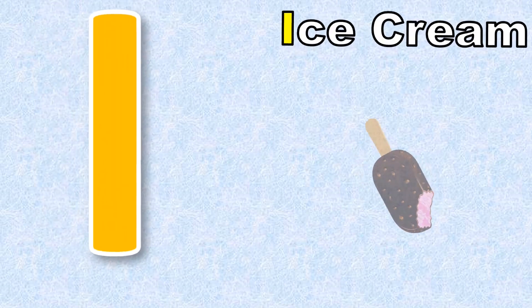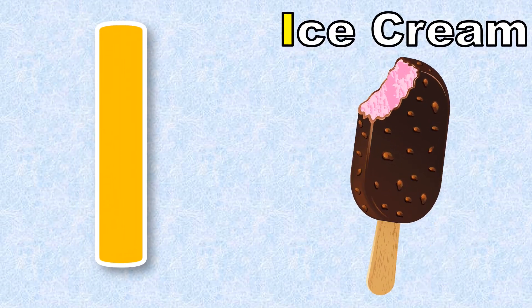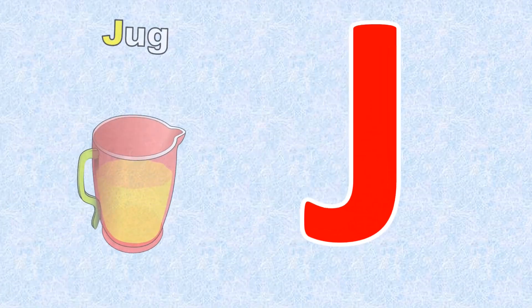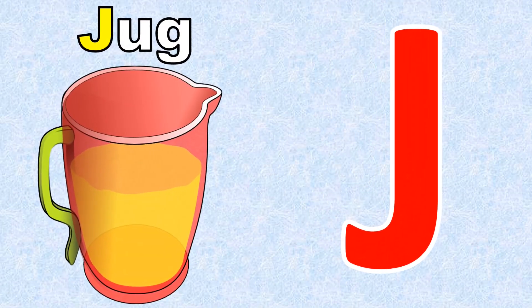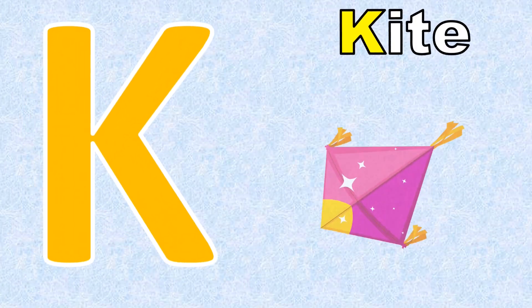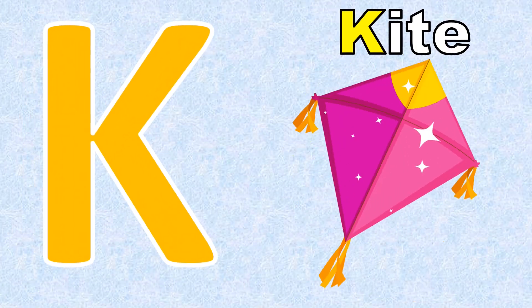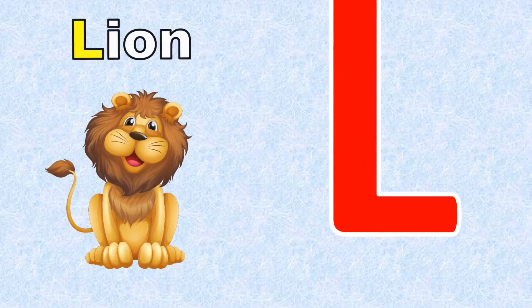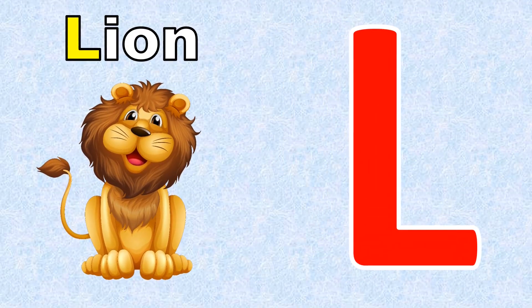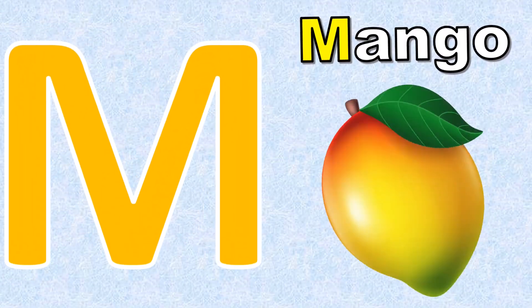I for Ice Cream. J for Jug. K for Kite. L for Lion.